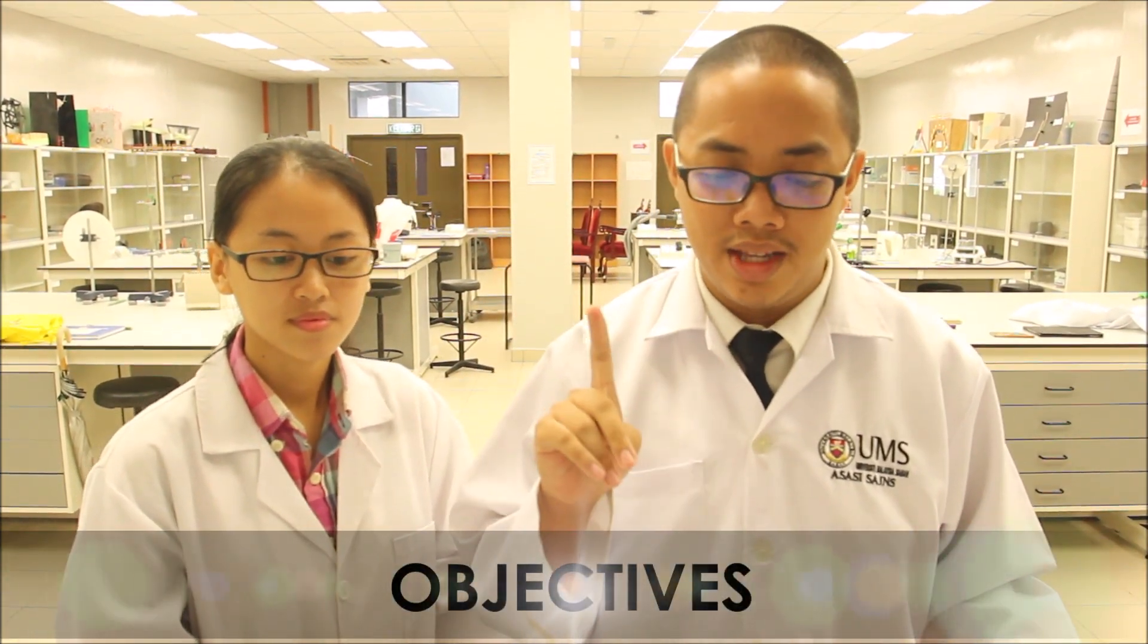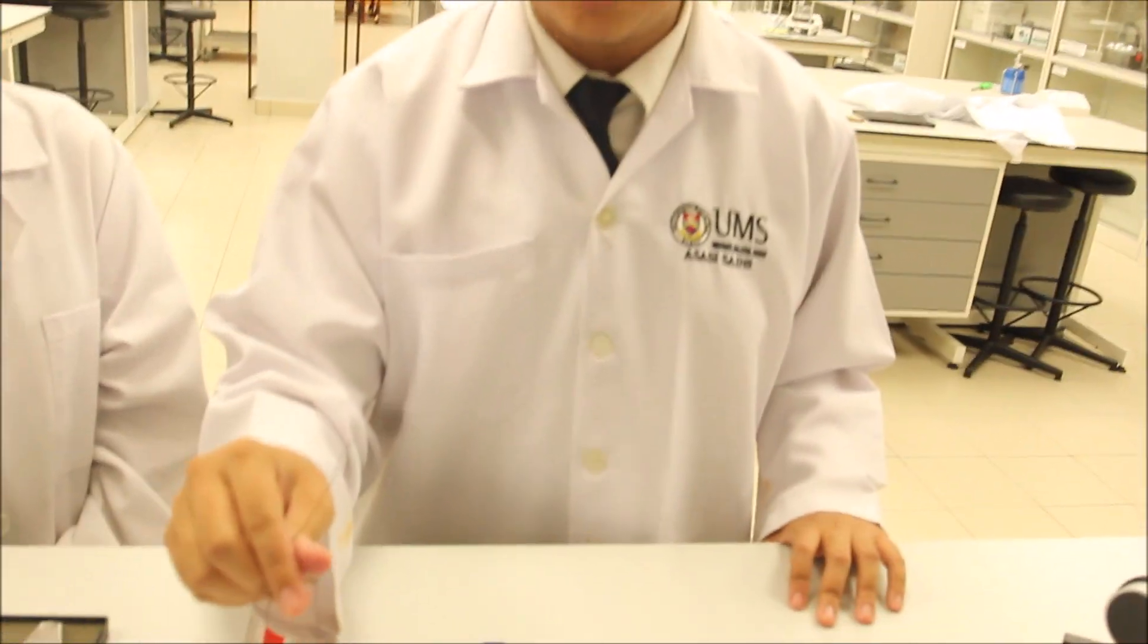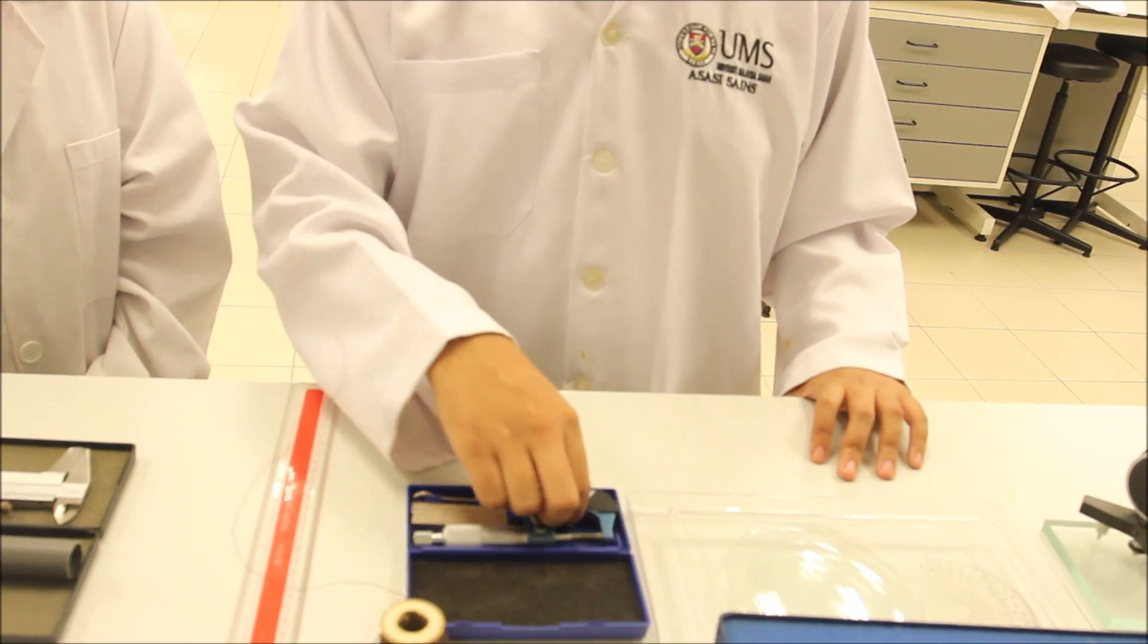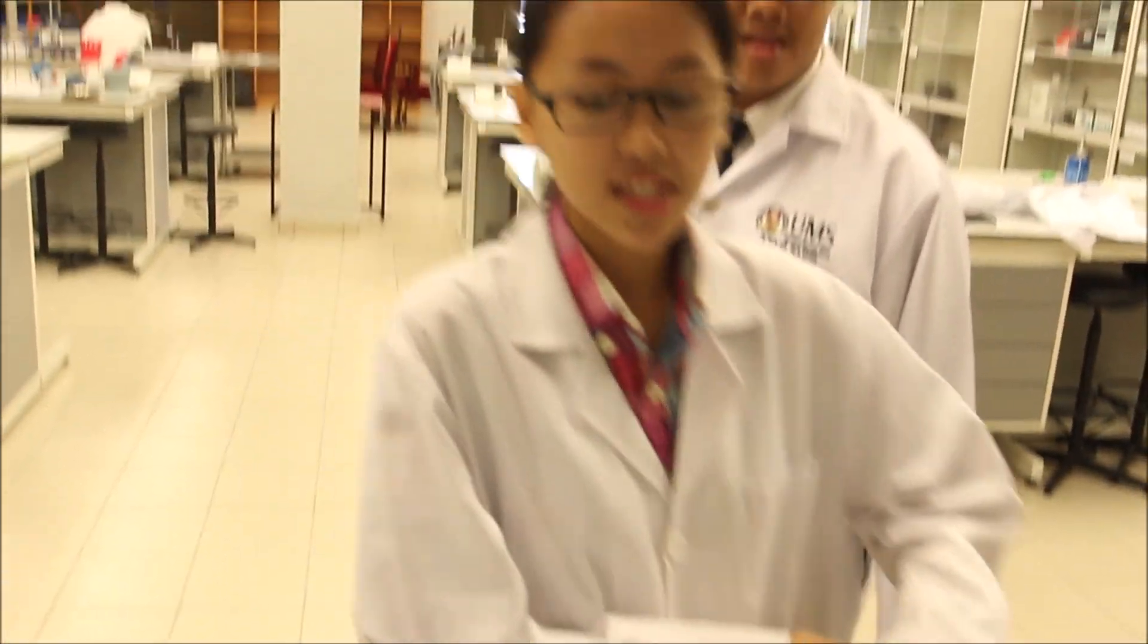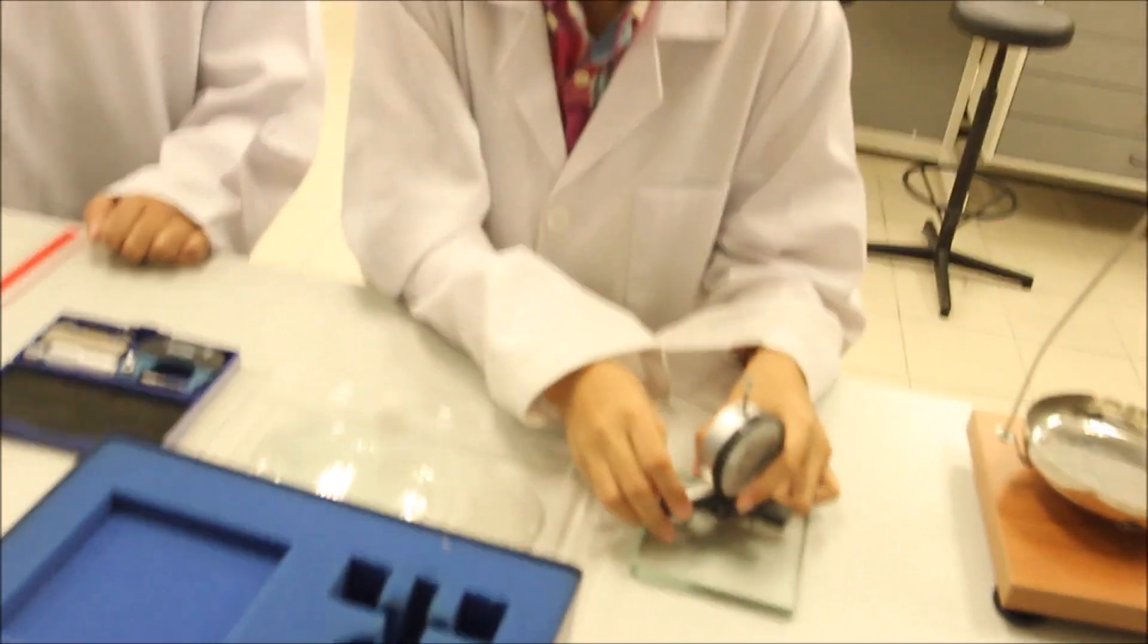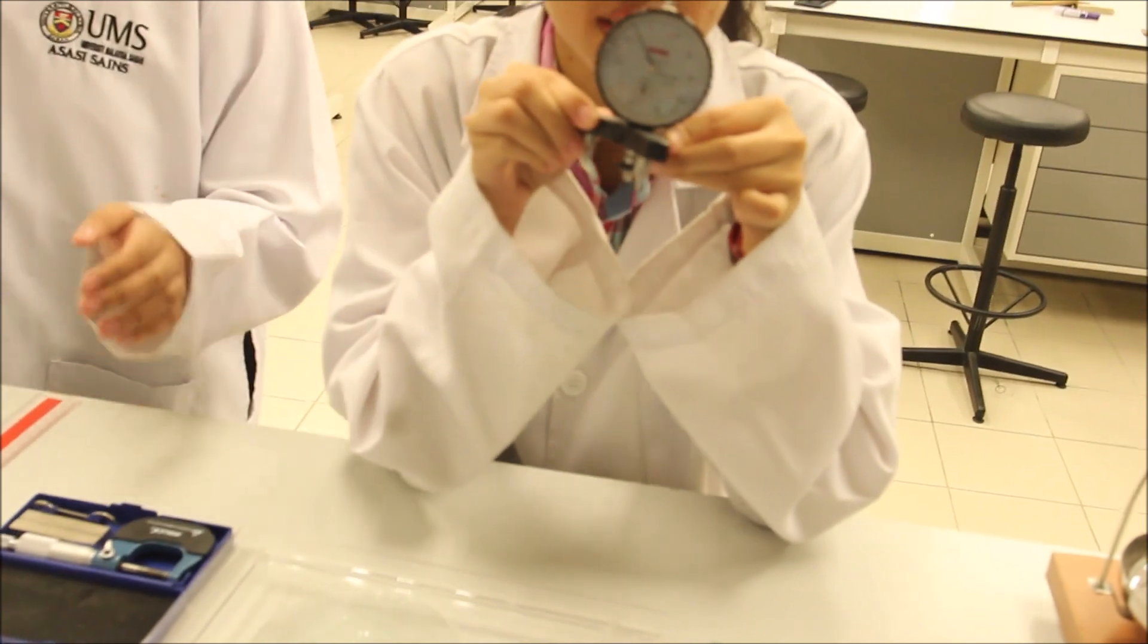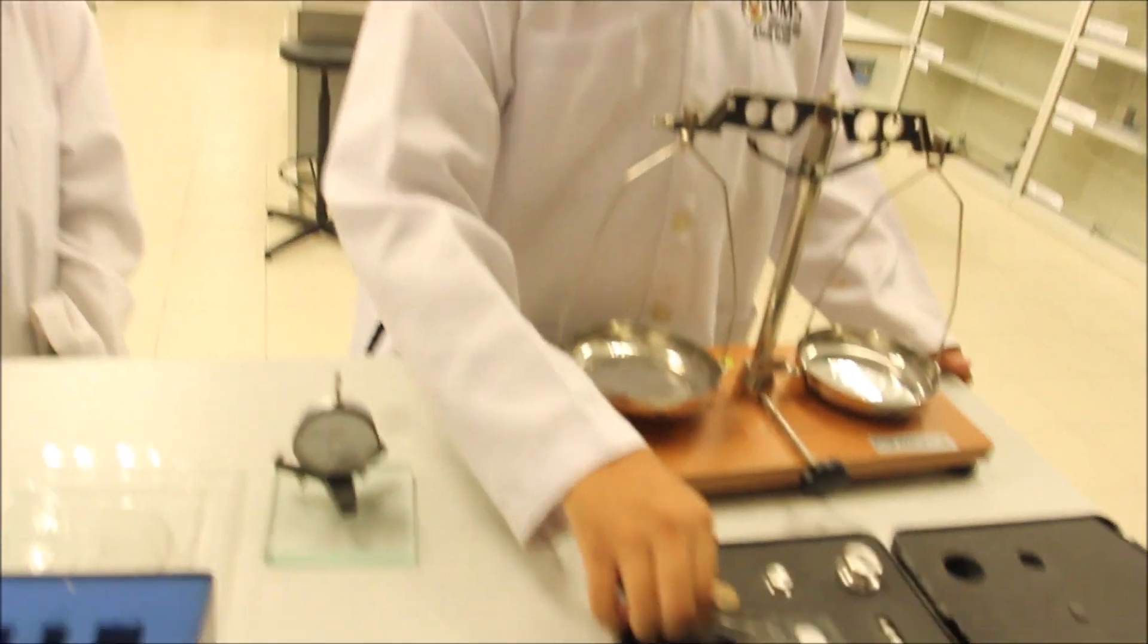In this experiment, we have 4 objectives. The first one is to determine the vernier of 3 different types of tubes with vernier caliper gauge. The second one is to determine the thickness of wires, cubes, and coins using micrometer screw gauge. The third one is to determine the thickness of the plate and the radius of the curvature of watch glasses with the spherometer. And finally, to determine the weight of different coins using manual precision balance.